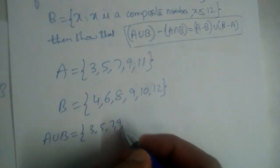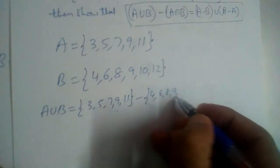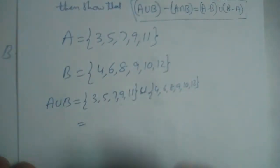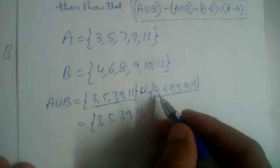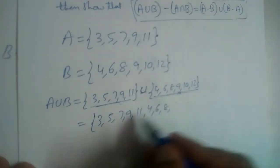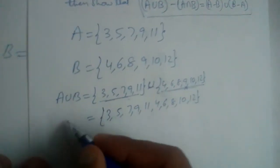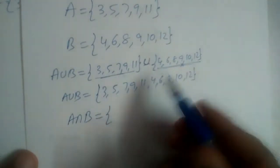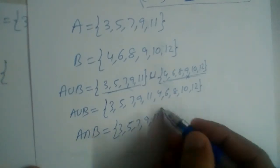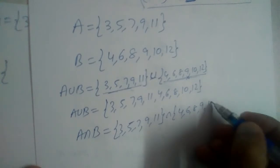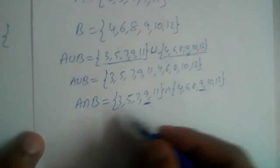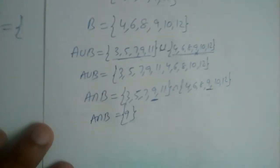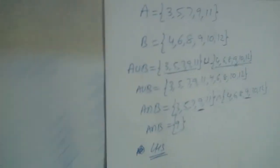So set B is equal to {4, 6, 8, 9, 10, 12}. Now we find A union B: combining all elements of A and B, writing 3, 5, 7, 9, 11, 4, 6, 8 — 9 is repeated so we skip it — 10 and 12. For A intersection B, we find what is common: only 9 is common, so A intersection B equals {9}.